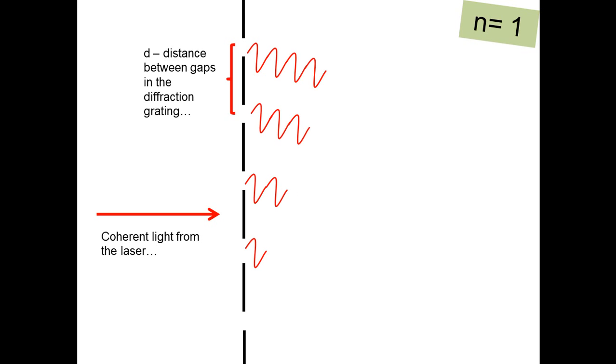You end up with a wavefront that's moving in that direction, and all the light from all the different diffraction gratings is in phase. So when this particular ray, or the rays coming from all the diffraction gratings, hits the screen, you're going to get constructive interference and you'll see a dot of light at that position.